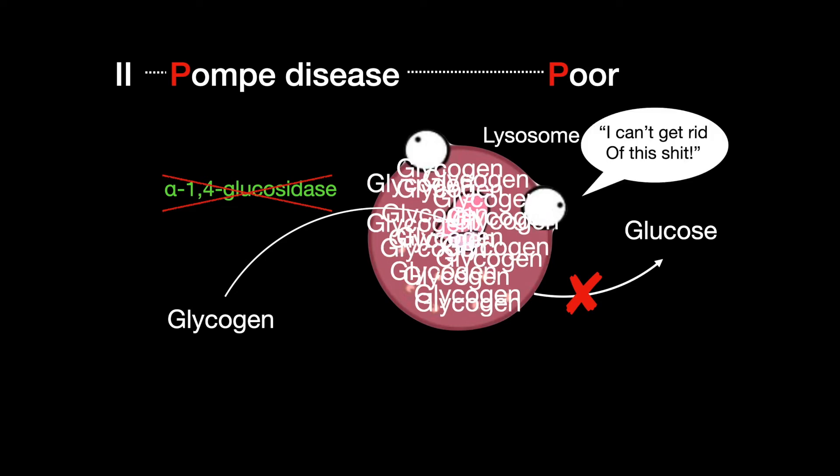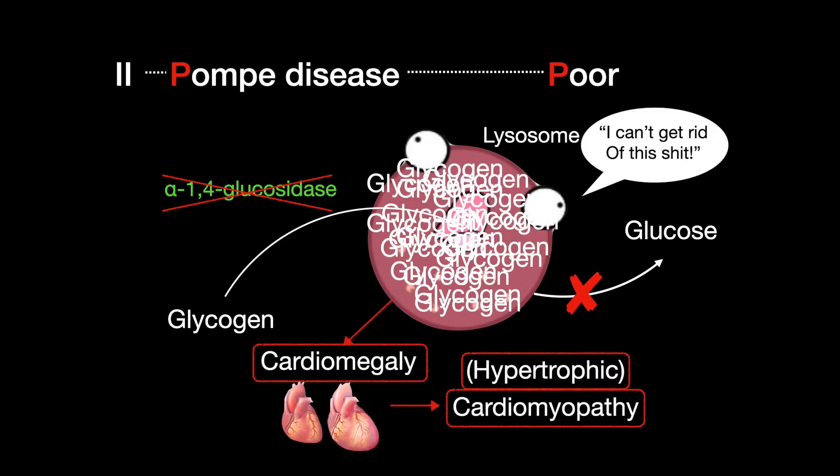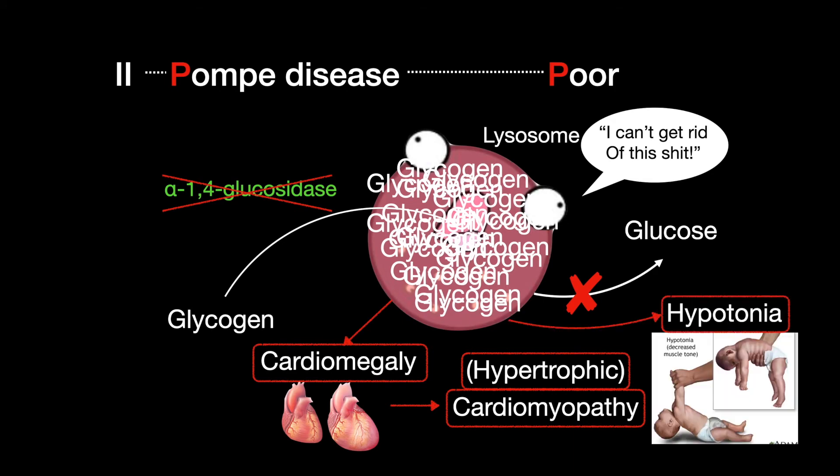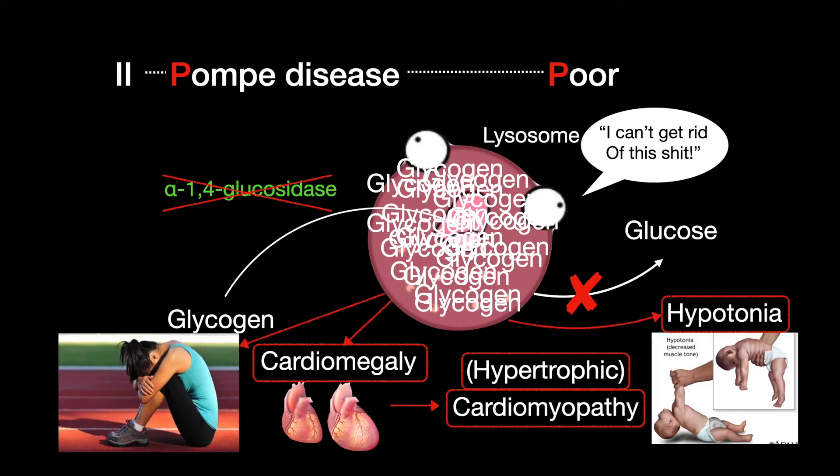With Pompe disease, cardiomegaly, hypertrophic cardiomyopathy, hypotonia, exercise intolerance, and even death occur.